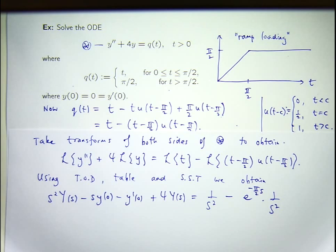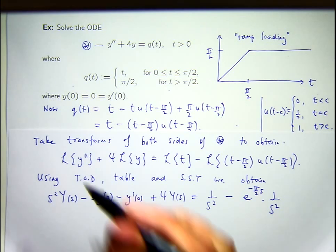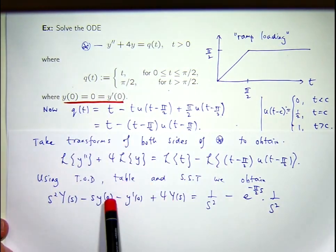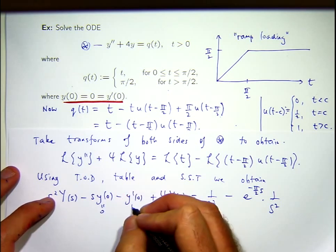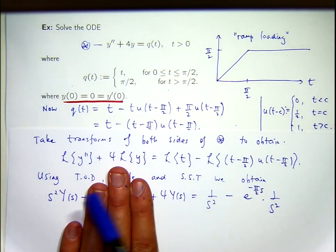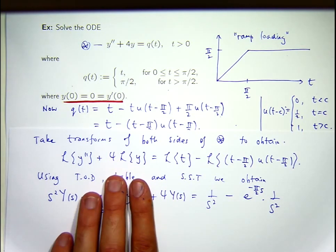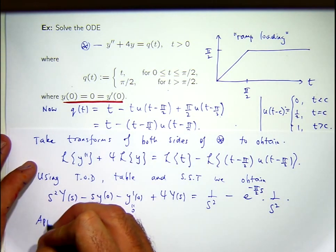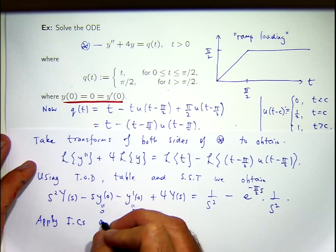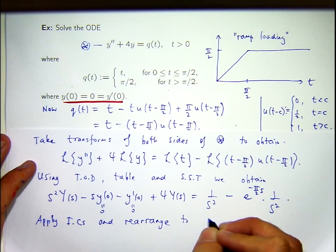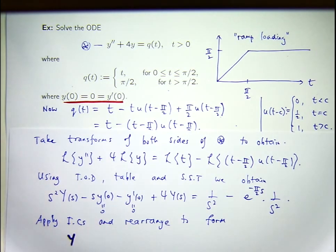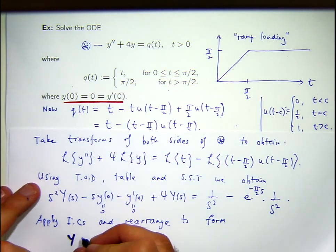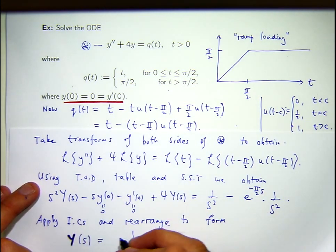Now, what I'm aiming to do in this transformed environment is to solve for big Y of S, then untransform everything and get back to the solution of the ODE. I need to apply the initial conditions. Looking at the initial conditions, those terms go to 0 and 0. These things disappear; I can factor out big Y of S and make Y of S the subject — I've solved the transform setting.